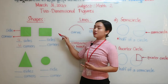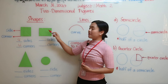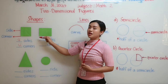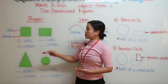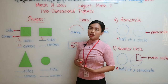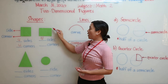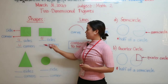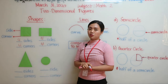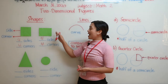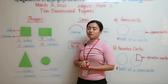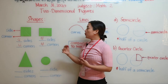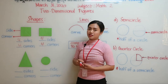Next we have rectangle. How many sides? We have one, two, three, and four — so there are four sides. And corners: one, two, three, and four — so there are also four corners. Now the height of the rectangle is different from the width of the rectangle.